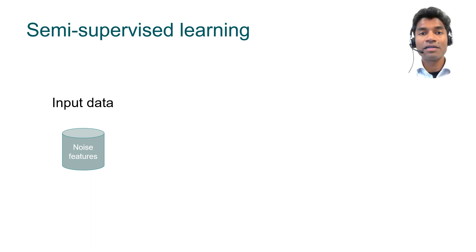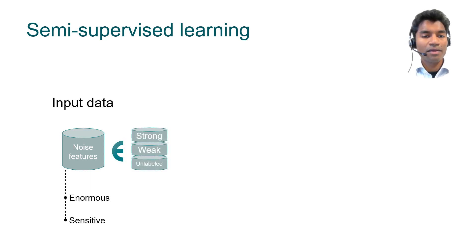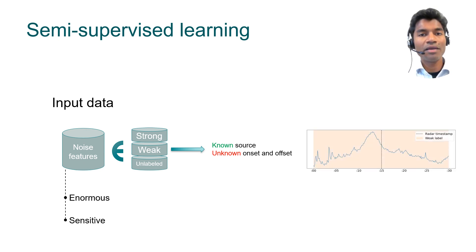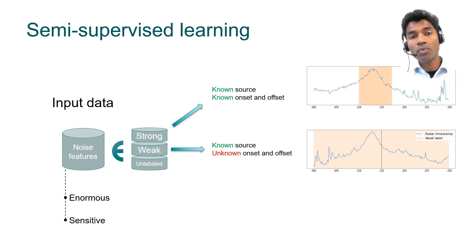This noise data comes with an interesting challenge. For one, it is enormous in quantity, but it is also sensitive in nature. Keeping these two in mind, we can think of the noise data as belonging to three kinds of datasets. What we call weak data refers to moments where we know that a vehicle exists, but we do not know when it begins and when it ends. Strong data is when we know a vehicle exists and we also know when it begins and ends.